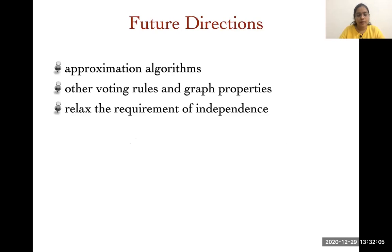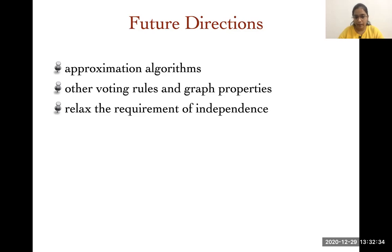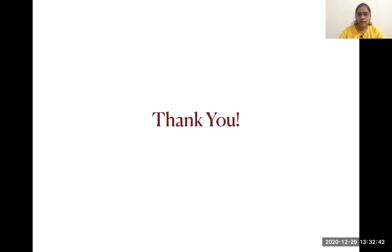Some future directions include looking for approximation algorithms, considering other voting rules and graph properties. Another interesting question is to relax the requirement of independence: instead of requiring no conflicts, we would like to minimize the number of conflicts between committee members, which means minimizing the number of edges within the committee. Thank you.